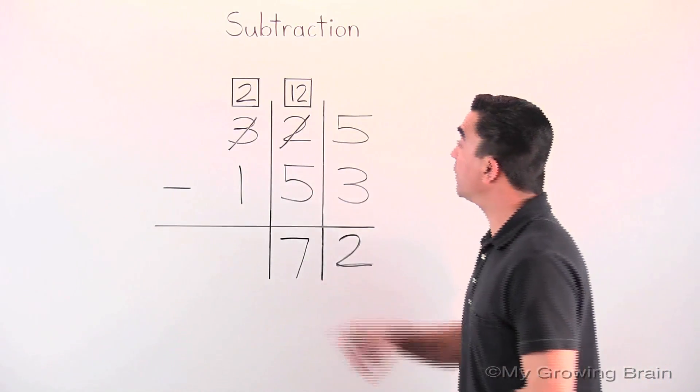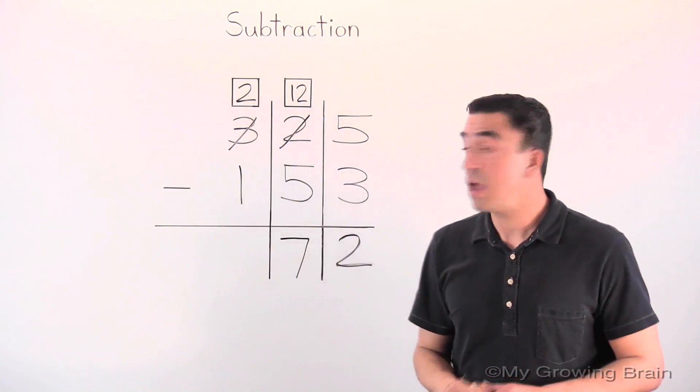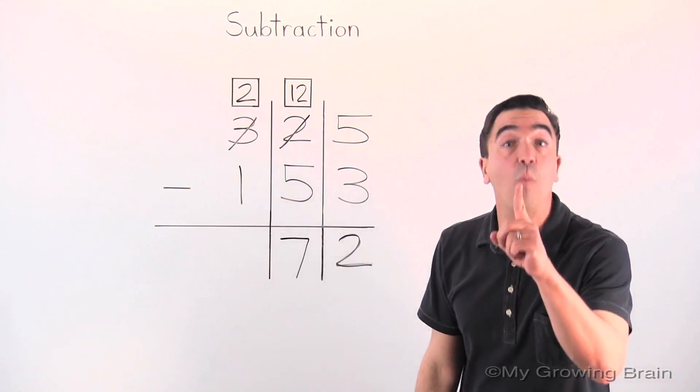Now, we go into the hundreds place. Two minus one is one.